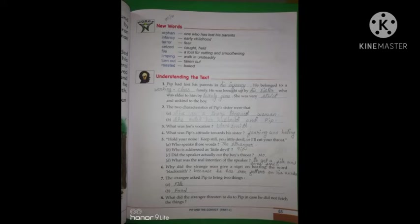Number two, the two characteristics of Pip's sister were that she was a sharp-tongued woman, and she ruled her husband and Pip. Next one, what was Joe's vocation? Yes, Joe's vocation, Joe was a blacksmith.